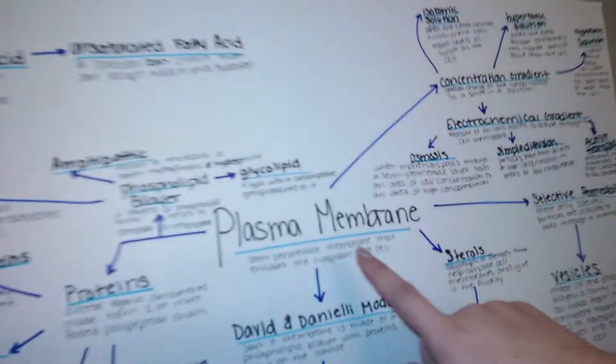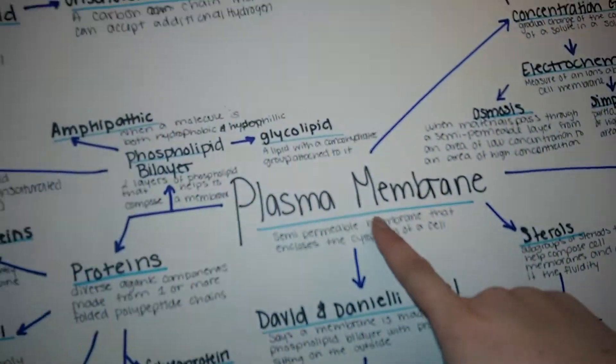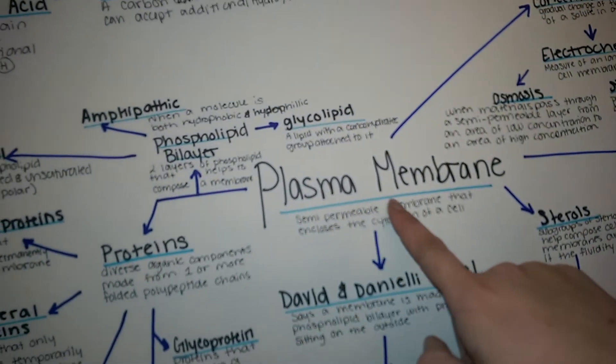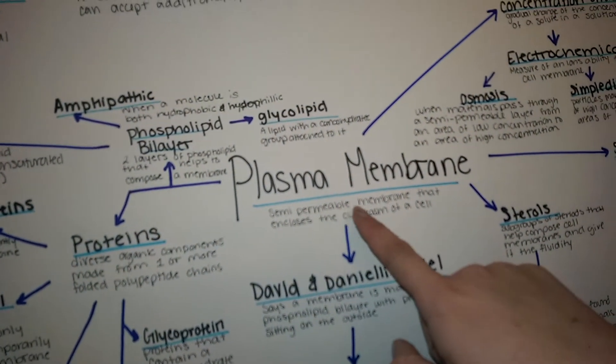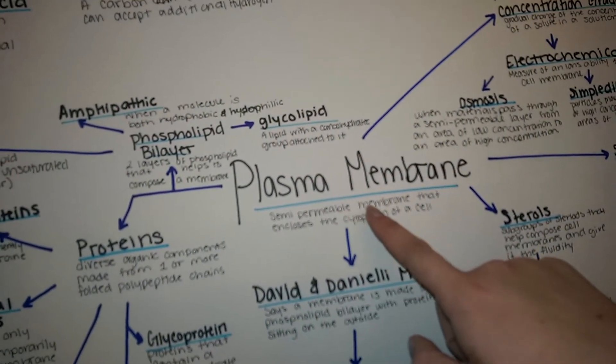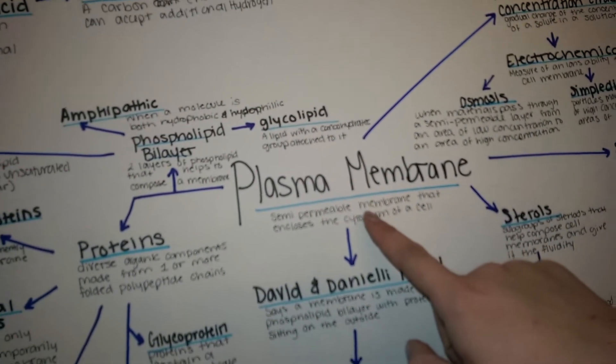Starting off, we have a plasma membrane, which is a semipermeable membrane that includes the cytoplasm and all organelles of the cell.